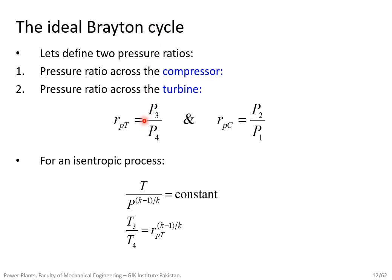For the ideal Brayton cycle, we define two pressure ratios: P3/P4 for the turbine and P2/P1 for the compressor. Since they lie on the same constant pressure lines ideally, P2 equals P3 and P1 equals P4. For an isentropic process, temperature and pressure are related by T/P^((K-1)/K) = constant. So T3/T4 = (P3/P4)^((K-1)/K), where K is the ratio of specific heats.